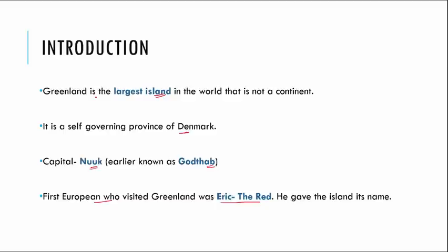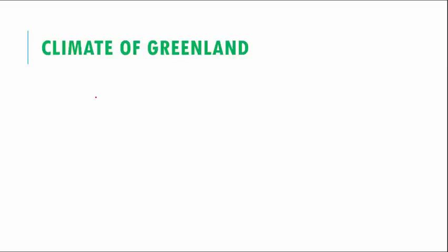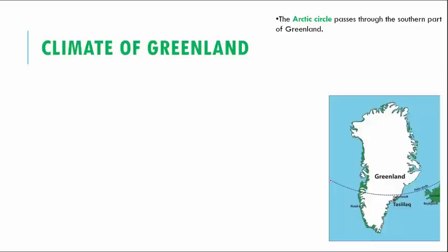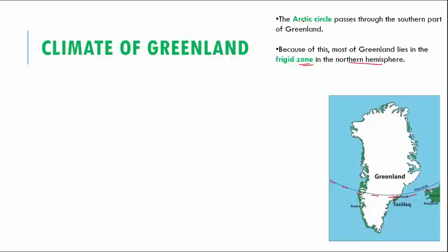When we see the climate of Greenland, the Arctic Circle passes through the southern part of Greenland. You can see in this picture that the Arctic Circle passes through the southern region. Because of this, Greenland comes into the frigid zone of the northern hemisphere. Most of Greenland lies in the frigid zone, and this region is also called the Tundra region.